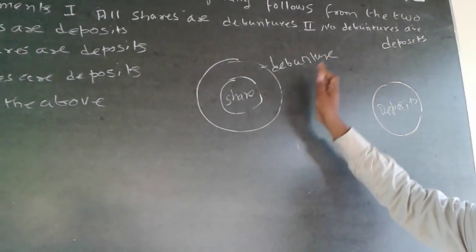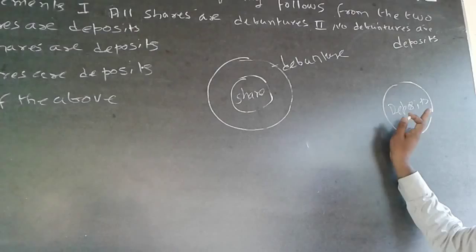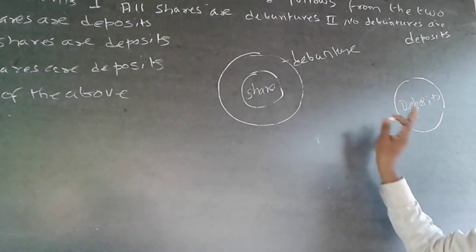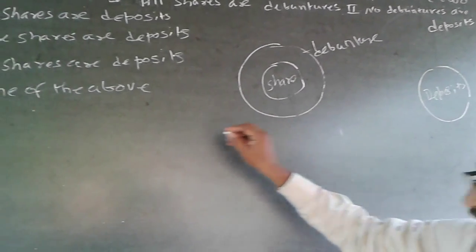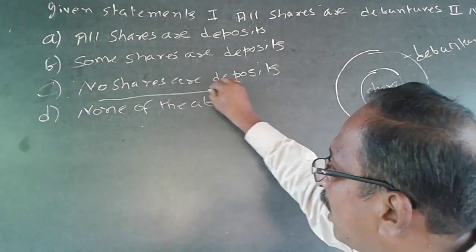And since all shares are debentures, no share can be deposit. The answer is no shares are deposits. The answer is C. No shares are deposits.